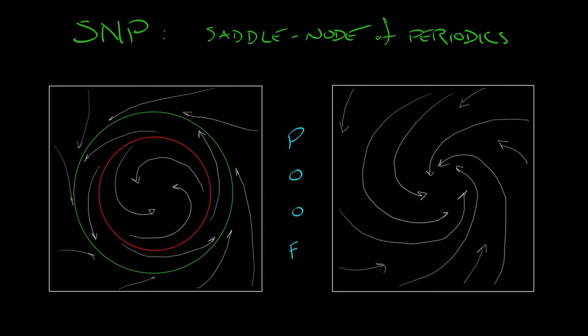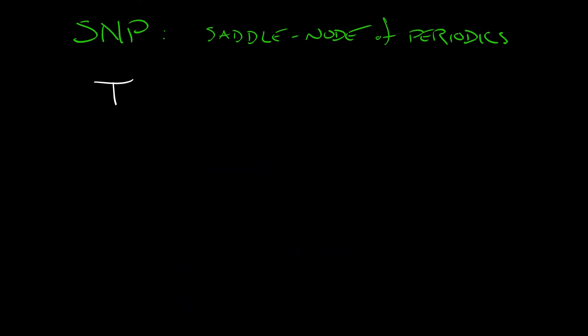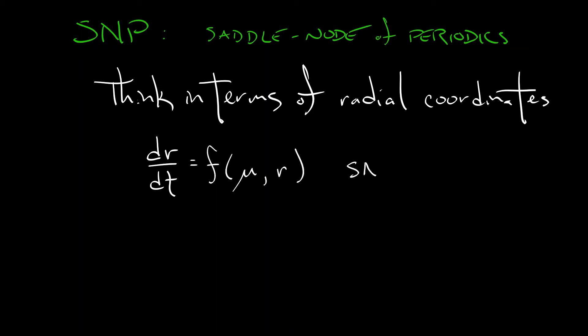The easiest way to see this in an analytical system is to think in terms of radial coordinates. Let's say you've converted to radial, and in the radial direction, your continuous time system looks like dr/dt equals some function of mu and r that expresses a standard saddle node bifurcation at some positive value of r. Now you add in an angular component that is moving monotonically. It's not stopping or turning around. And if you've got that bifurcation at a positive value of r, you're going to get exactly what was illustrated.